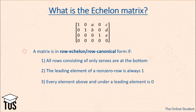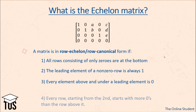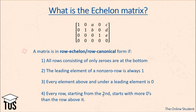Continuing: every element above and below a leading element must be 0. We can see that above and below each leading element it is always zero. Lastly, every row starting from the second starts with more zeros than the row above it. The second row starts with one zero, the third row starts with three zeros, and the last row starts with five zeros.